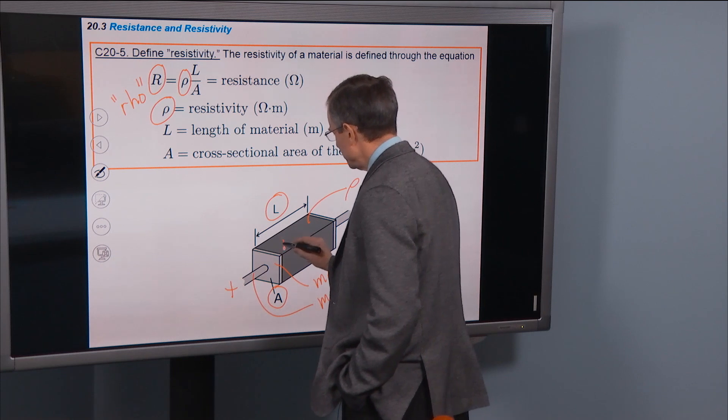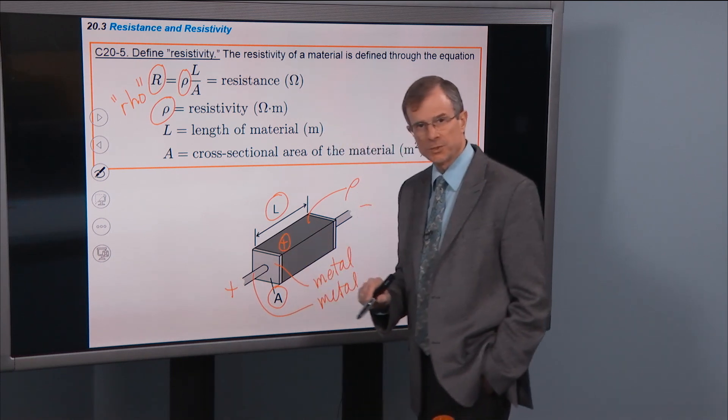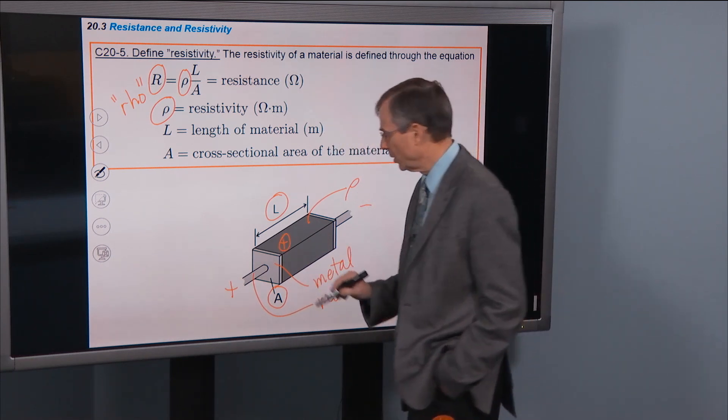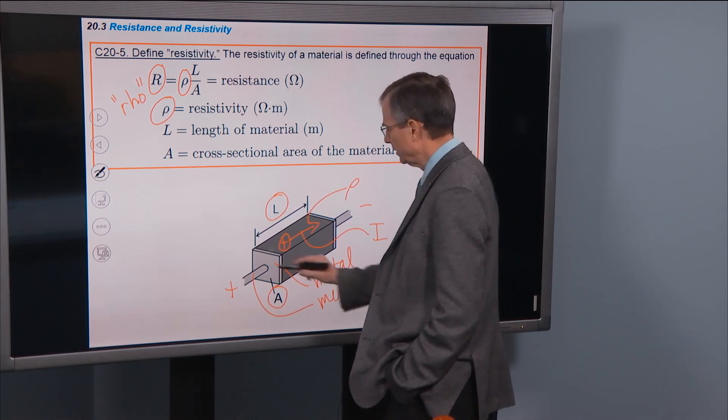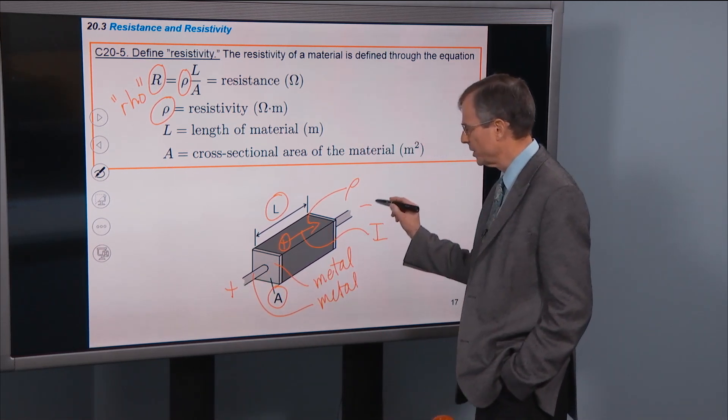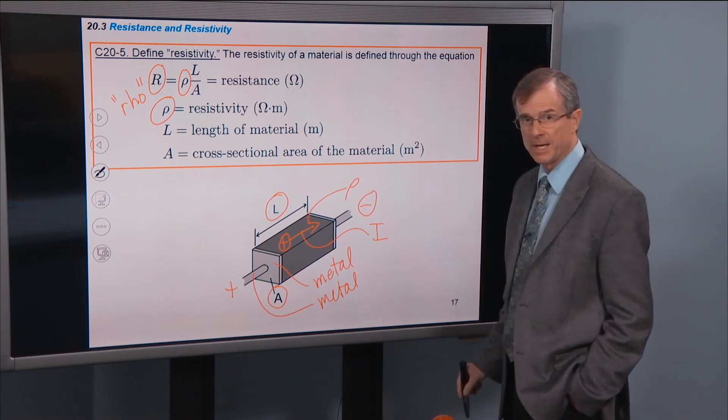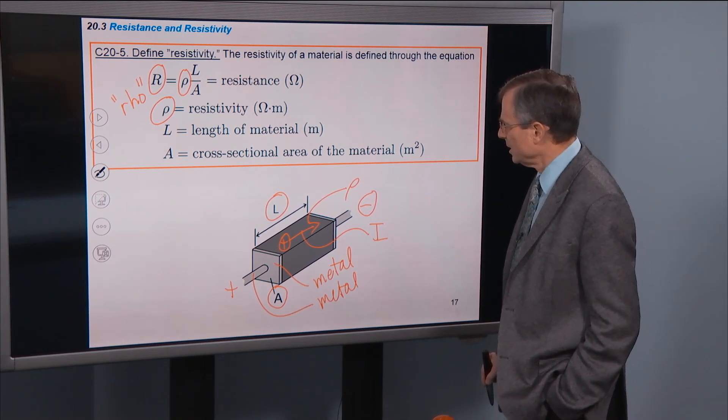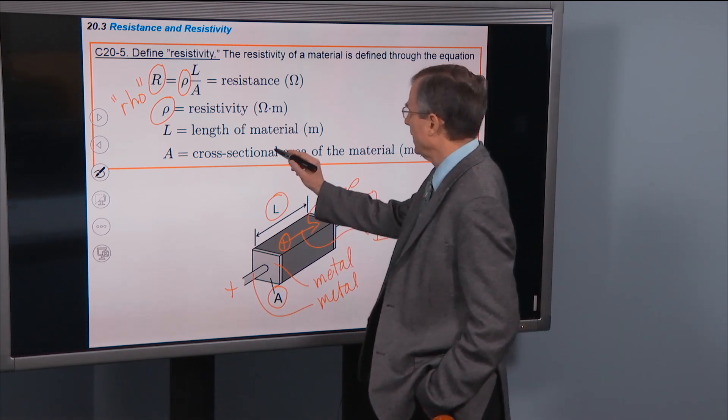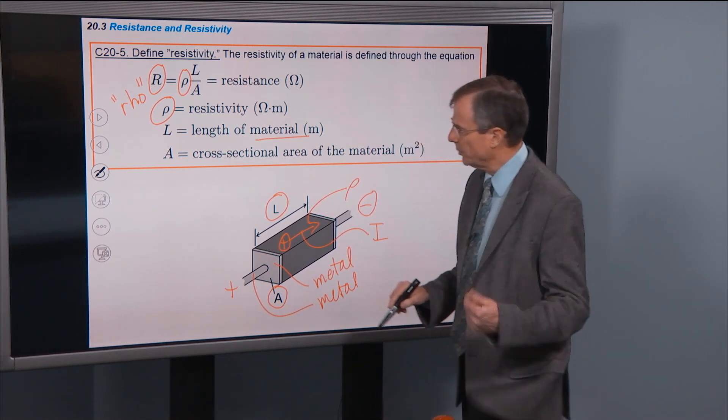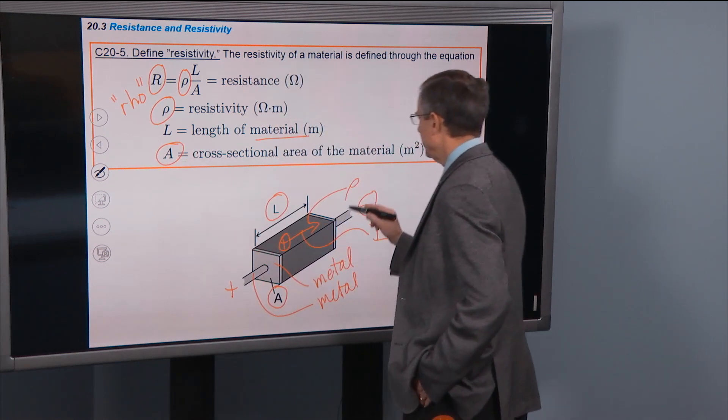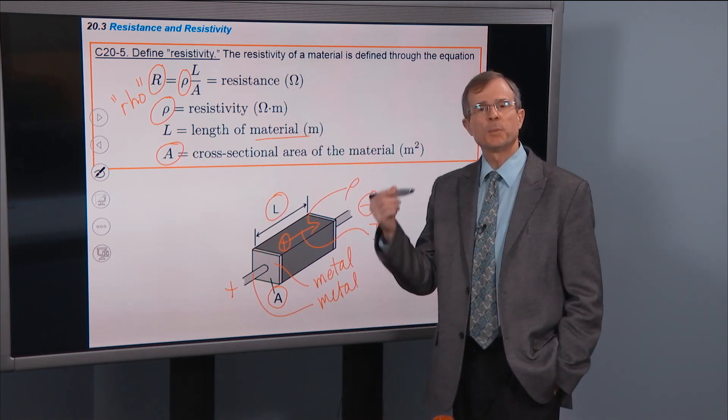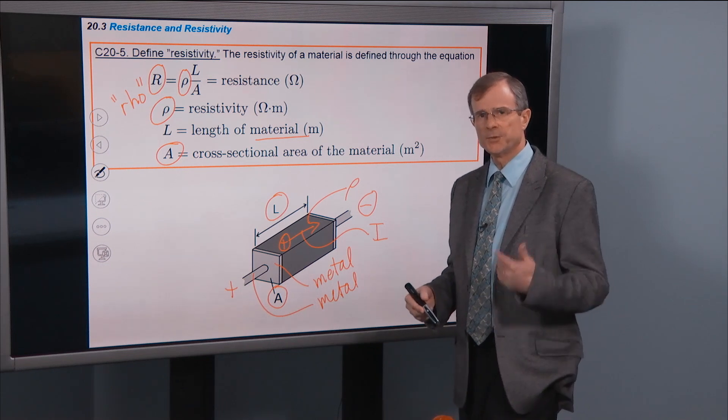...oh I know that. I just put a positive charge here and ask which direction it's going to go. And that will be this direction. It will be repelled by this positive charge and attracted to the negative charge on the other side. So that would be the direction of current. And that length L of material is in the direction of the current. And then A is a cross-sectional area of the material that is perpendicular to the direction of the current.